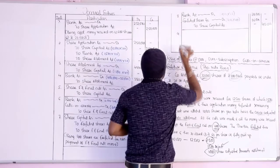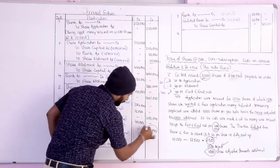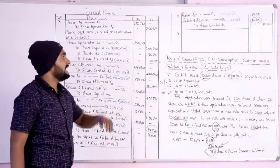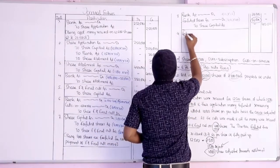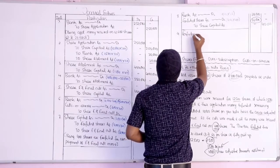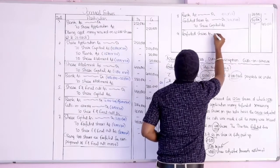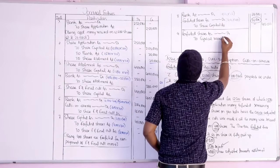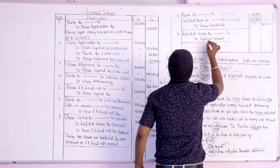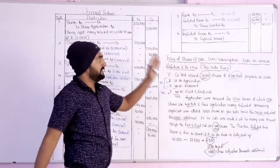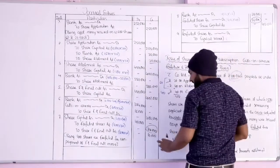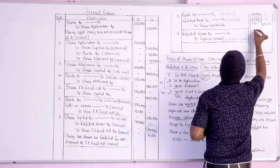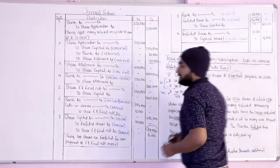Capital Reserve transfer: Forfeited Shares Account debit to Capital Reserve Account. Total forfeited shares account had ₹24,000; minus ₹16,000 used on reissue, so ₹8,000 transferred to Capital Reserve. Narration: excess of forfeited amount transferred to Capital Reserve. This completes the solution.